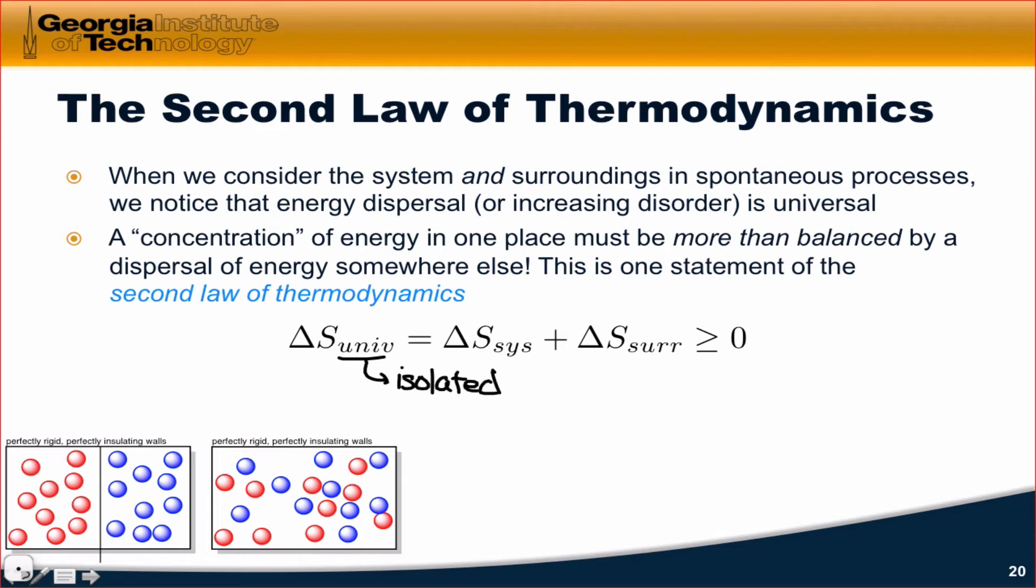Just as we saw for the isolated system with the hot and cold blocks, the change in entropy for the universe for any spontaneous process must be greater than or equal to zero. When we're thinking about the universe, we're thinking about a system and surroundings. But we can subdivide any isolated system into system and surroundings and come to the same conclusion.